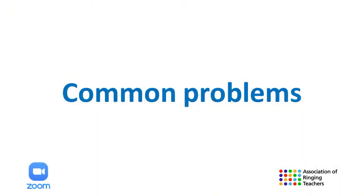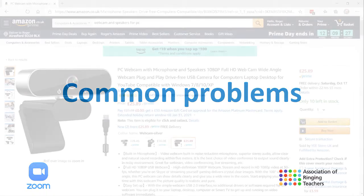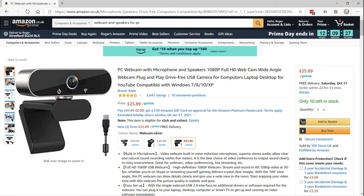Common problems. It may sound obvious, but you need to have a computer with a webcam, microphone and speaker. Most laptops come with these inbuilt, but some PCs do not. If you do not have them, they can usually be bought online for as little as around £25. If you are not sure, do arrange a trial run with your host, who can then help you troubleshoot any issues.